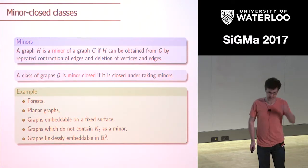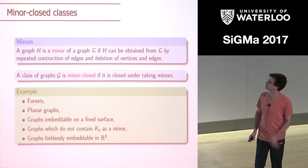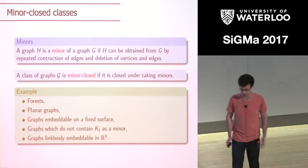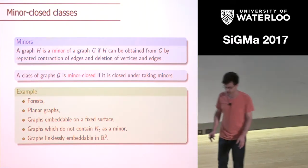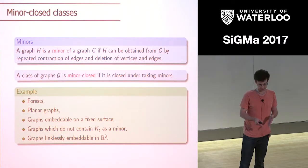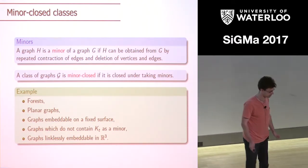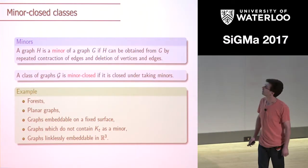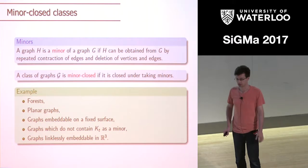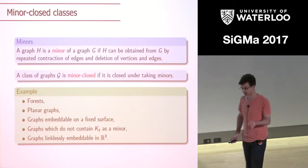On the first slide there's a definition of a minor, which should be familiar to everybody. If you are more comfortable with matroid minors, graph minors behave almost in the same way. The main protagonist of this talk will be a minor-closed class of graphs — a class which is closed under taking minors. I'll use the convention of excluding the class of all graphs, so whenever I say minor-closed class I assume something has been excluded.